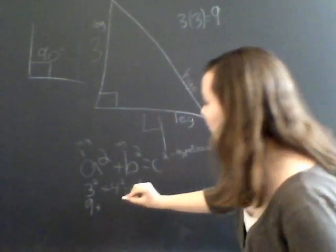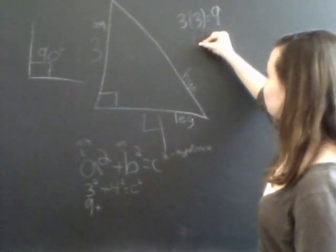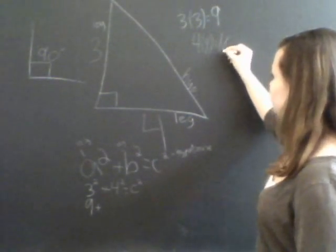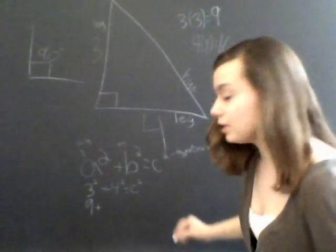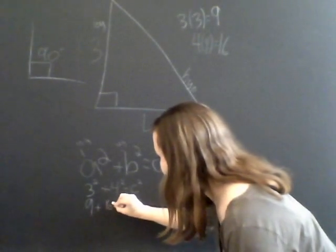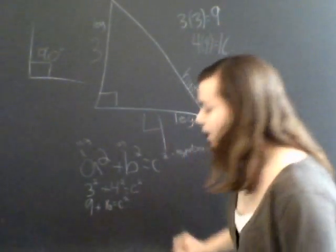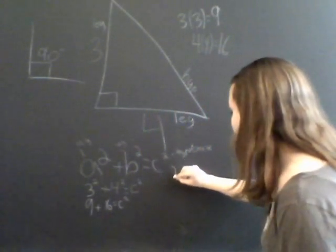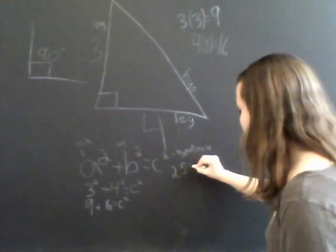So now we are at nine plus four squared. And four squared is four times four, likewise, and is 16. So we are at nine plus 16 equals C squared. And nine plus 16 equals 25. So 25 equals C squared.